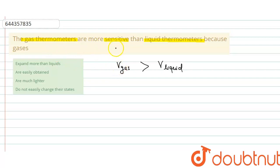thermometers are more sensitive than liquid thermometers. So the correct option is 'expand more than liquid.' That's why gas thermometers are